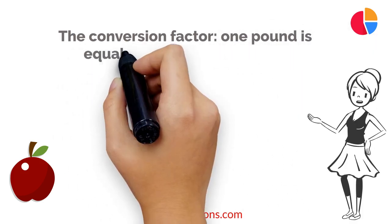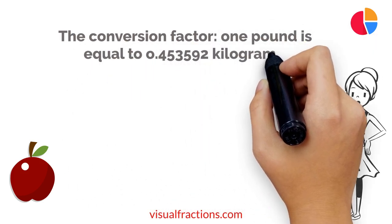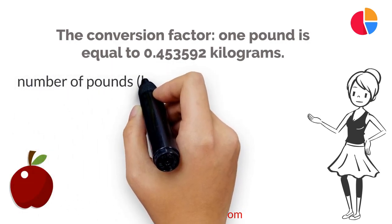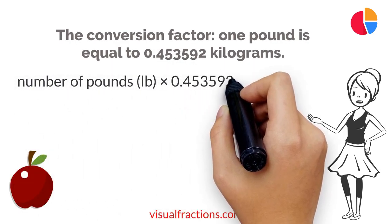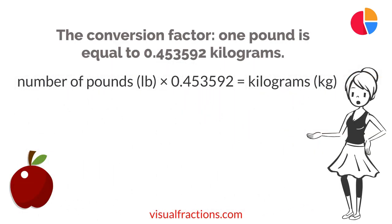is approximately equal to 0.453592 kilograms. To convert pounds to kilograms, all you need to do is multiply the number of pounds by this conversion factor.